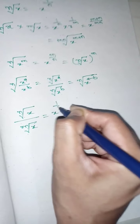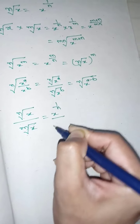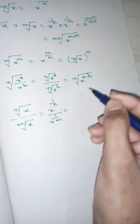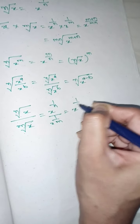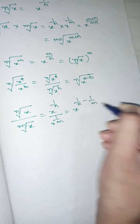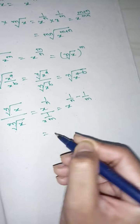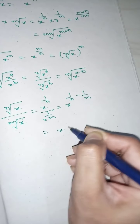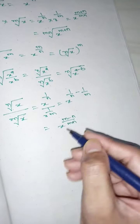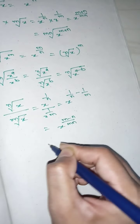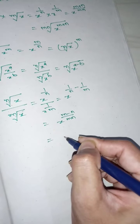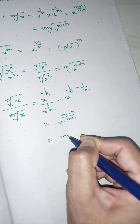We also have x to the power of 1 by n divided by x to the power of 1 by m. Applying the same concept, where m is greater than n, we get the result in terms of mn.